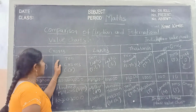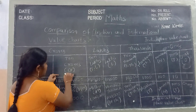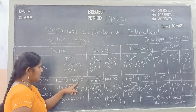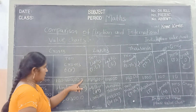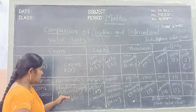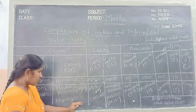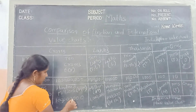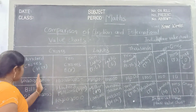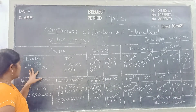Next one in the Indian place value chart is crores, short form CR. And ten crores, short form TCR. In the international place value chart, that one is hundred billions. See children, how I am keeping commas: in Indian place value chart — comma after three digits, then two, two digits. In international place value chart — comma after every three digits, three digits.